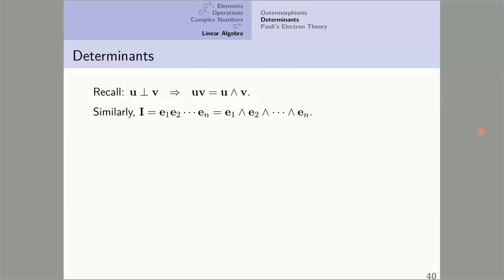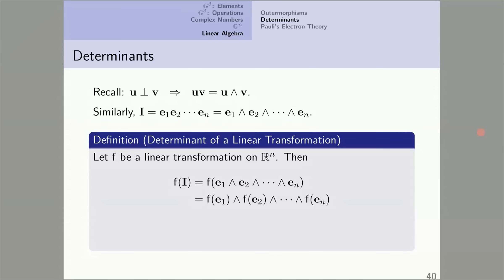Now we're ready for the definition. We start with a linear transformation F on R^n. It extends to an automorphism on G^n, and in particular I can compute F of I. I'll replace I by its equal and then use the automorphism property to write it this way. This is an outer product of N vectors in G^n, that is to say an N-vector. We know that N-vectors form a vector space of dimension one. So this N-vector must be a scalar multiple of this N-vector. That scalar multiple is called the determinant of F.